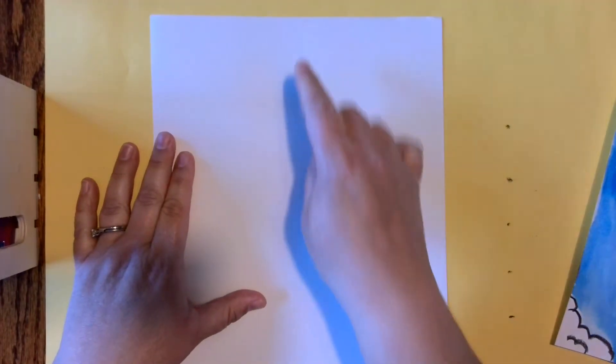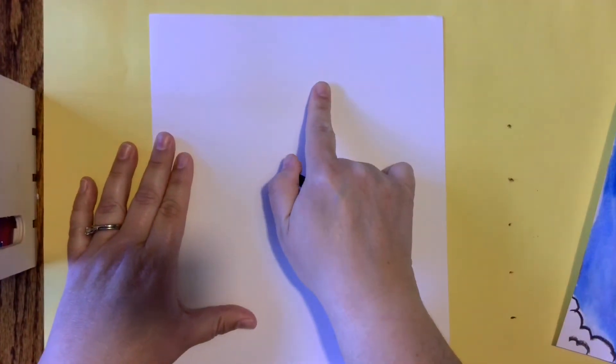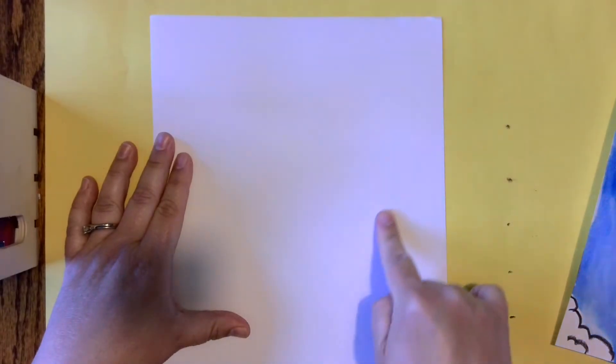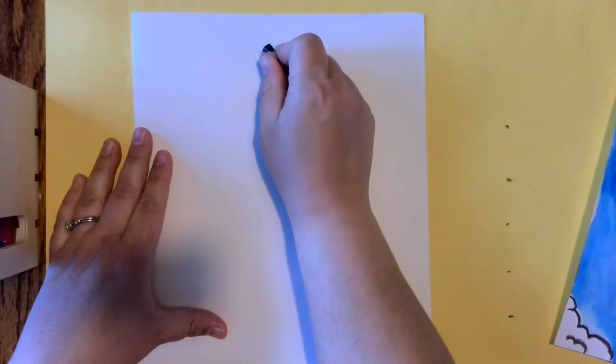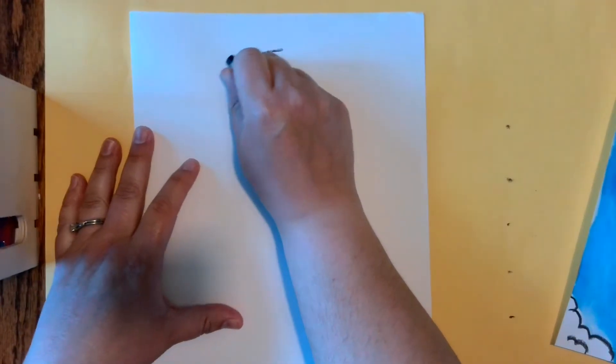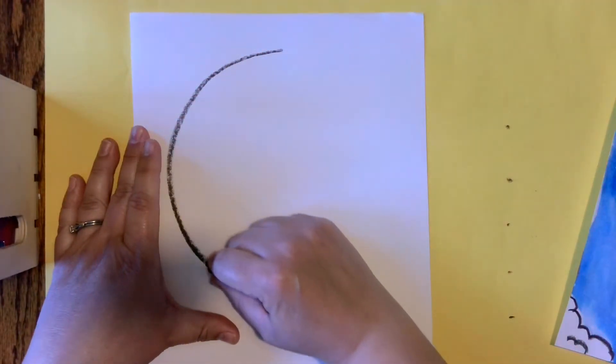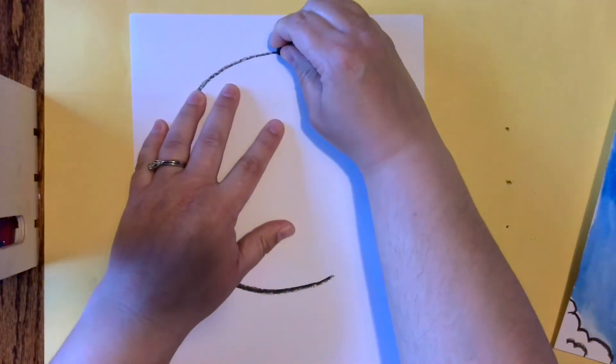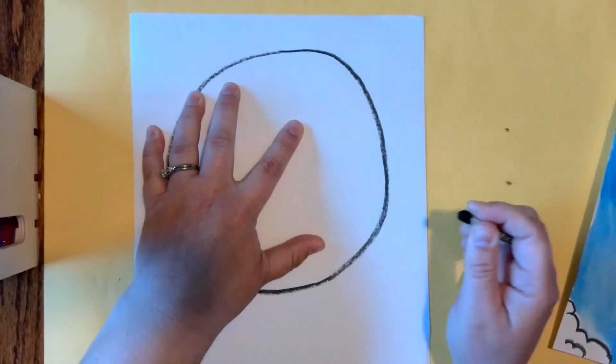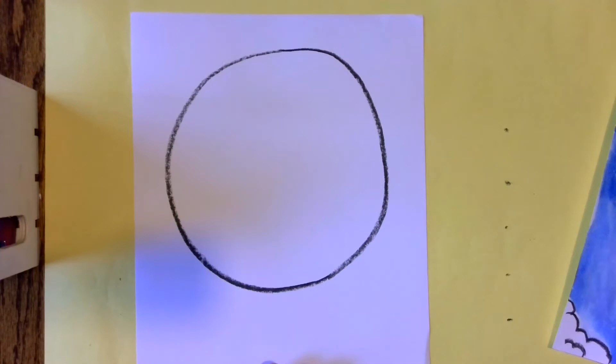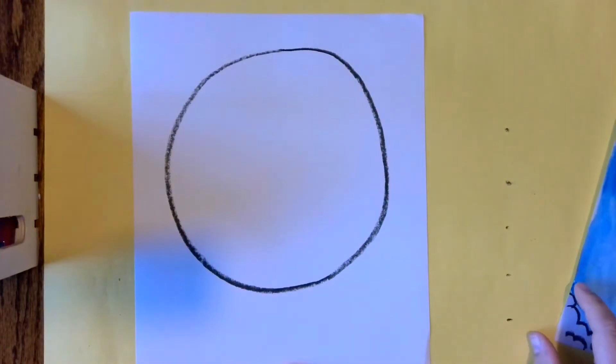So you could find a lid or something else that is a circle to trace to make a nice circle for your hot air balloon. I'm just going to do my best to make my circle free-handed. But again, if you want to trace something, find something to trace it. You can pause the video and draw with me, go find something, come back, or if you want to do this on your own later.